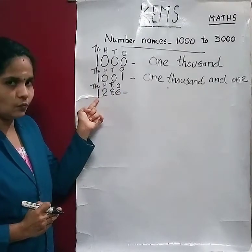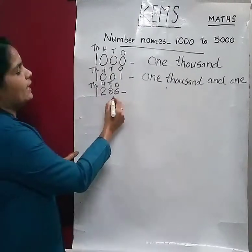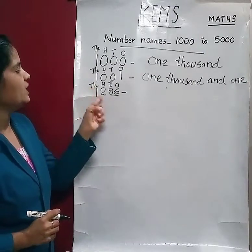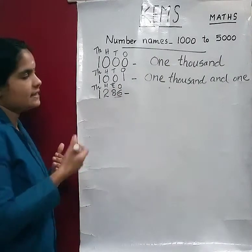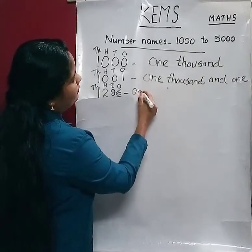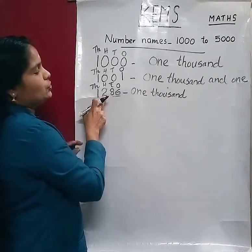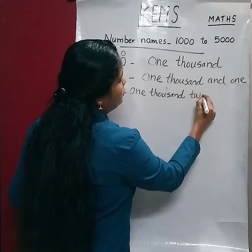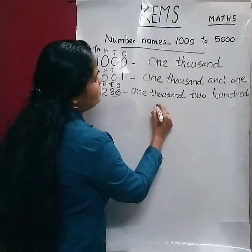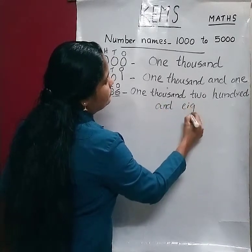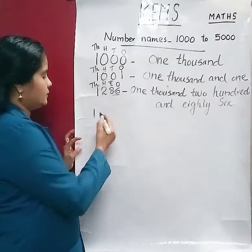So how do we read this number? 1,286. One thousand — the thousands place has 1. Then 2 in the hundreds place means two hundred. Then the last two numbers together: eighty-six. So we read: one thousand, two hundred, and eighty-six.